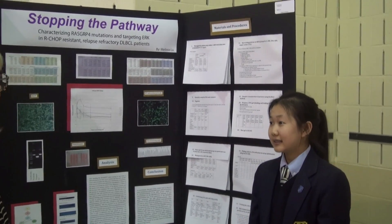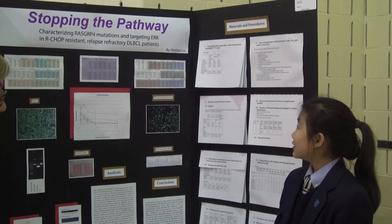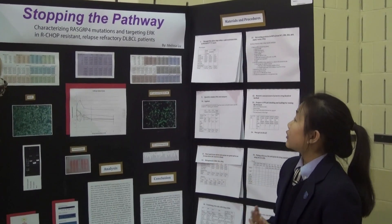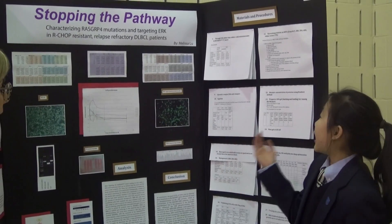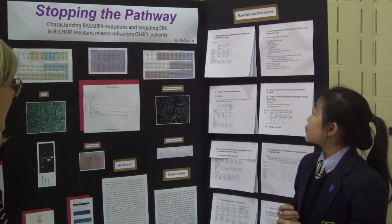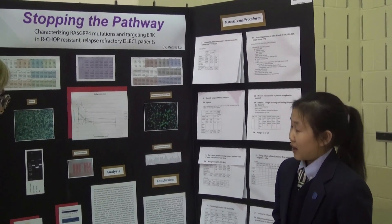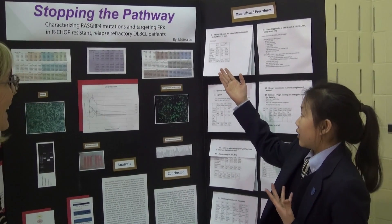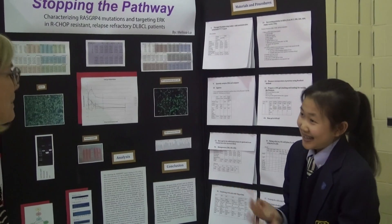I'm currently in grade 11. And can you tell me a little bit about this fascinating science project? Of course. So my project is entitled Stopping the Pathway, Characterizing RASGRAP-4 Mutations and Targeting ERK in ARCHOP-Resistant Relapse Refractory DLBCL Patients. So I'm just going to start by explaining a little bit of what my title is about. Okay, that would be good. That would be helpful.